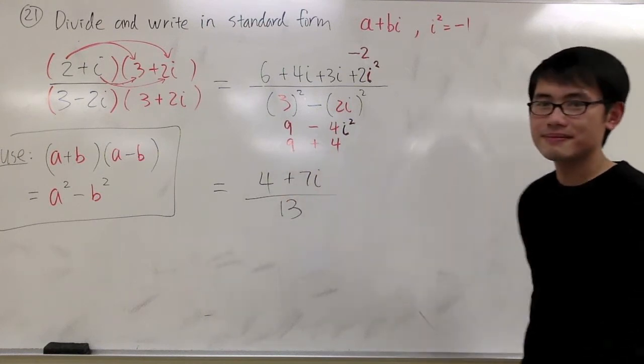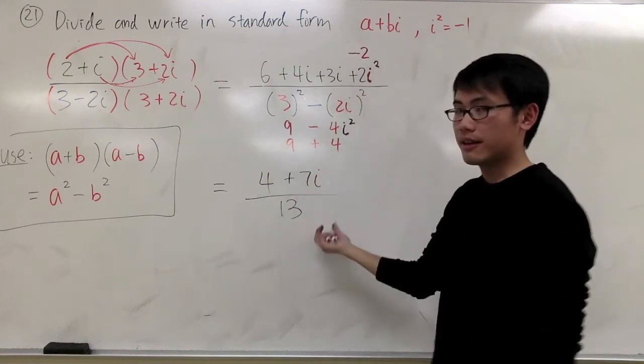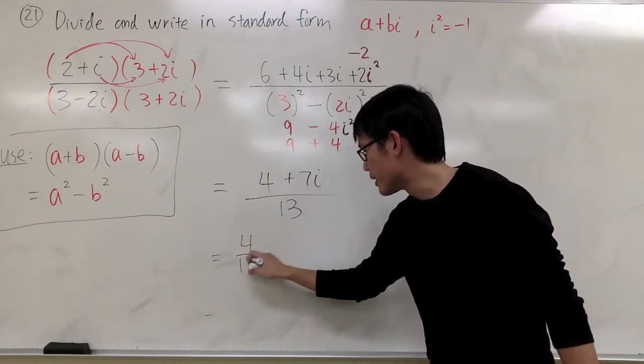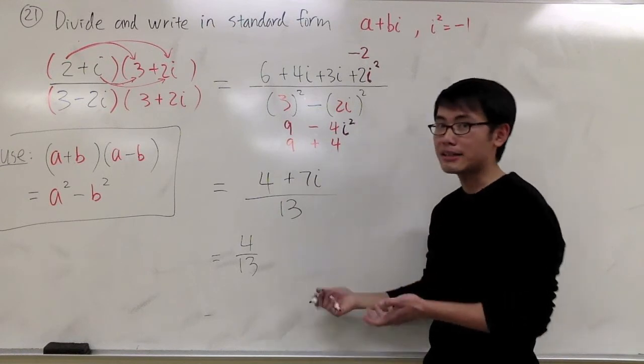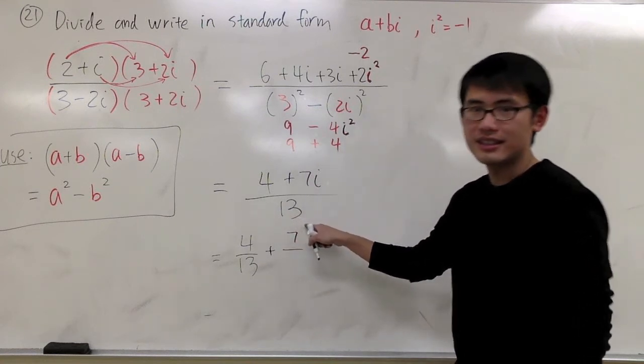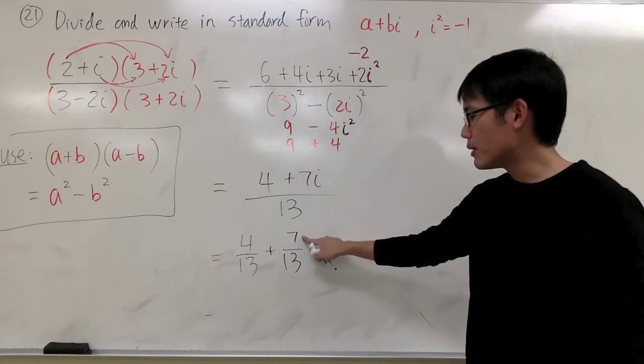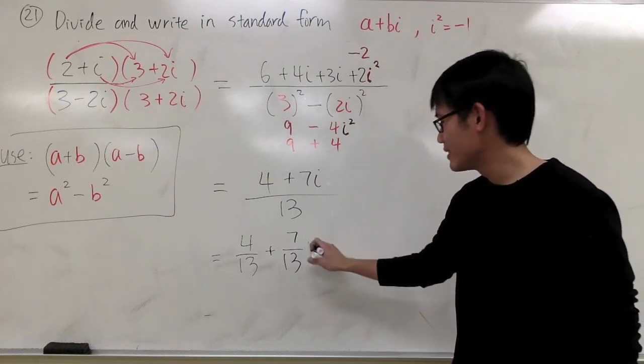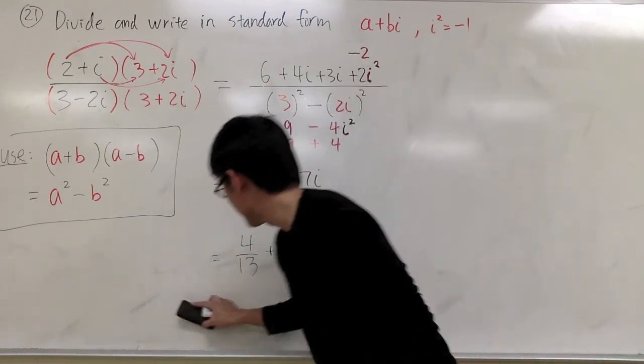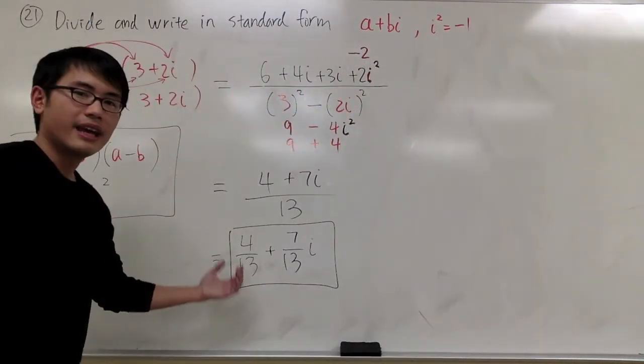To make what we have right here in the form of a plus bi, we can just split the fraction. I will write this as 4 over 13, and these are just regular numbers with no imaginary number i's. Plus 7 over the denominator 13, times i. You can put it on the top or on the side, but do not put it on the denominator. That's how it works. This right here is the answer in the form of a plus bi.